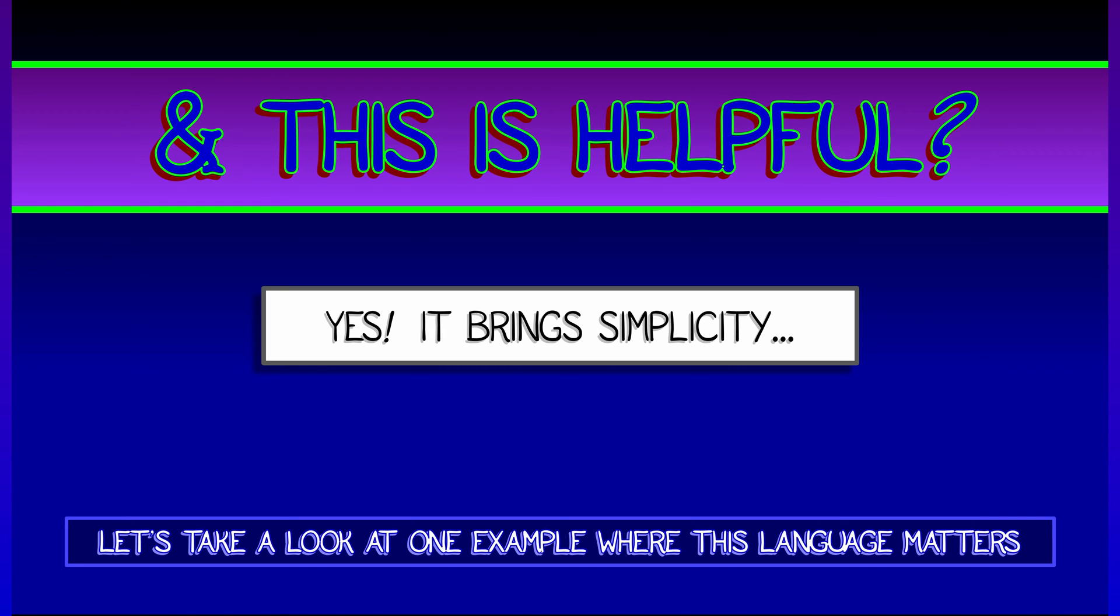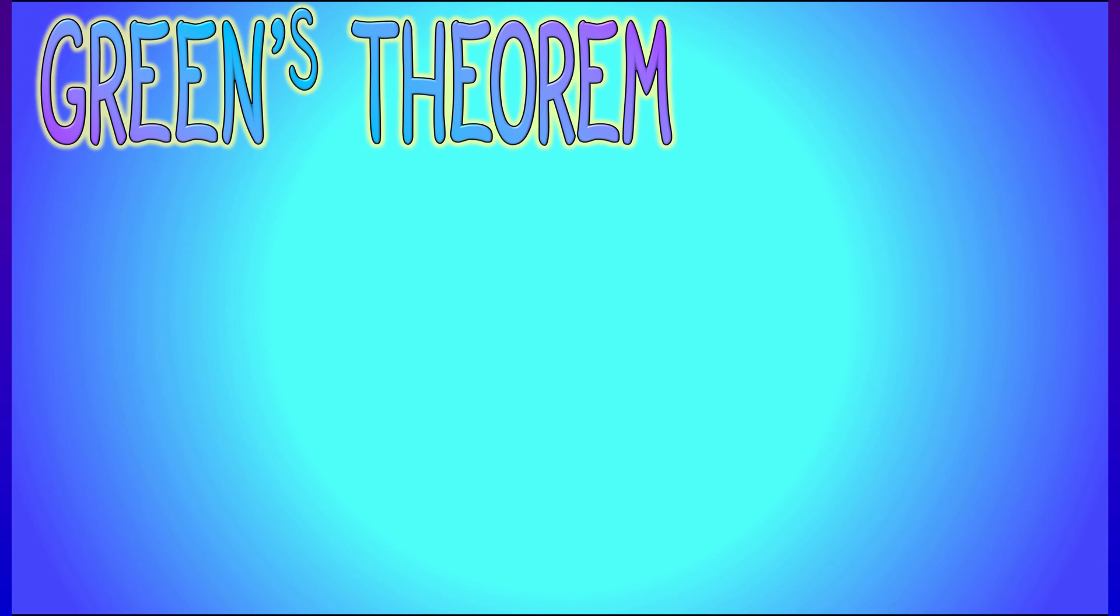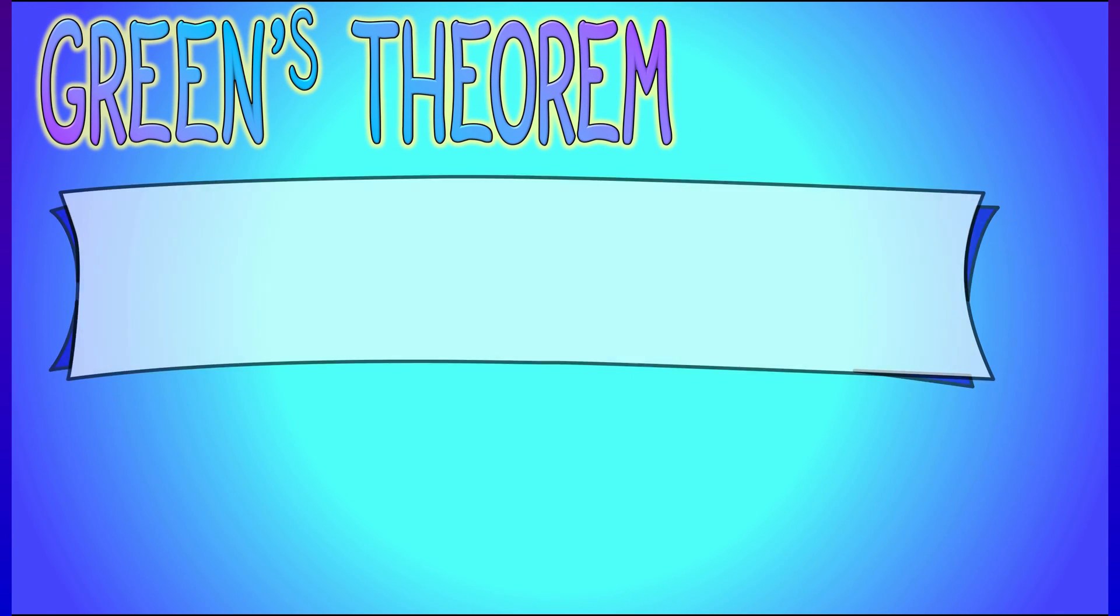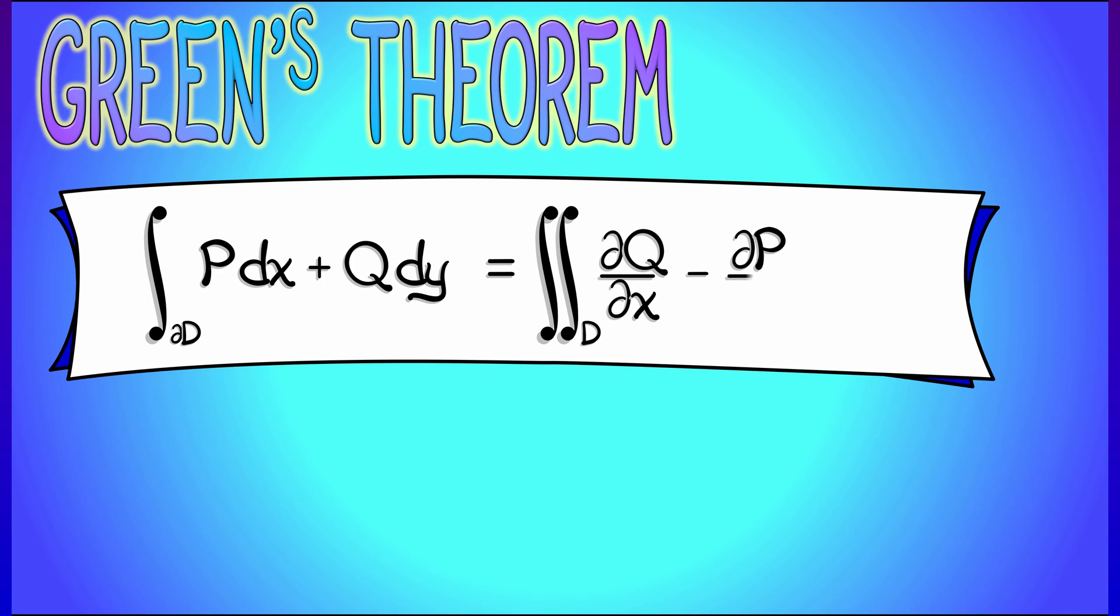It's going to simplify a lot of things and generalize greatly. Let's look at one example where this language of integrating a two-form field in the plane really makes a difference. And this is in the context of Green's theorem. Remember Green's theorem, in the most general case, the integral of pdx plus qdy over the boundary of some planar domain D is really the double integral of partial q partial x minus partial p partial y with respect to area.